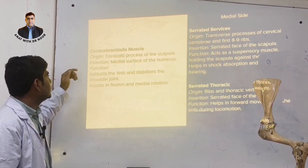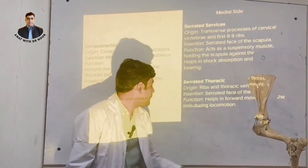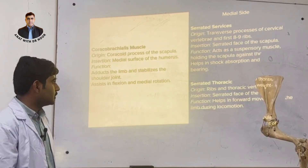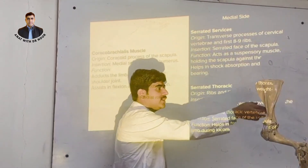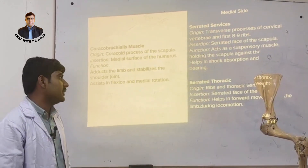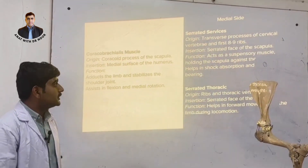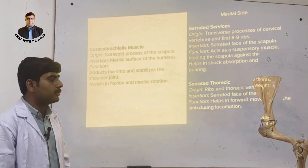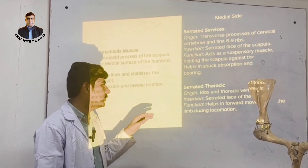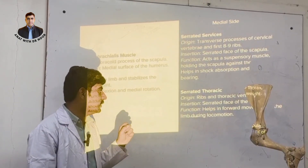The coracobrachialis muscles originate from the coracoid process of the scapula, insert into the medial surface of the humerus, and function to stabilize the shoulder joint and assist in flexion and medial rotation. The serratus cervicis muscles originate from the transverse processes of cervical vertebrae and the first eight to nine ribs, insert into the serrated face of the scapula, and act as suspensory muscles holding the scapula against the thorax for shock absorption and weight bearing. The serratus thoracis muscles originate from the ribs and thoracic vertebrae, insert into the serrated face of the scapula, and help in the forward movement of the limb during locomotion.